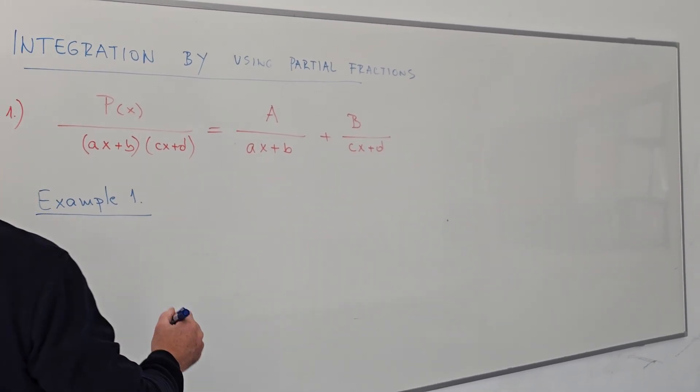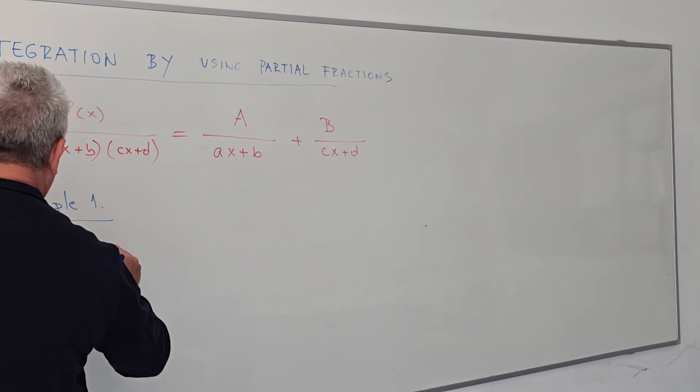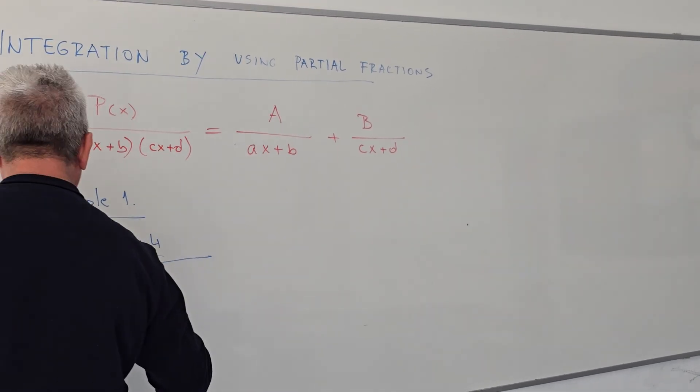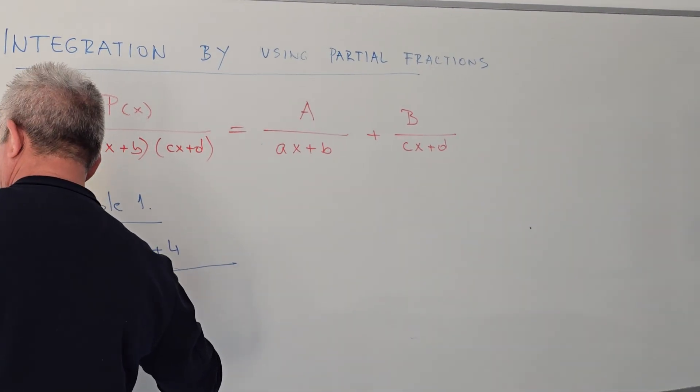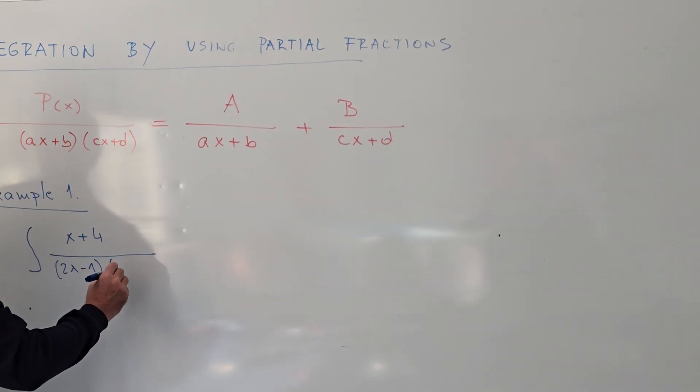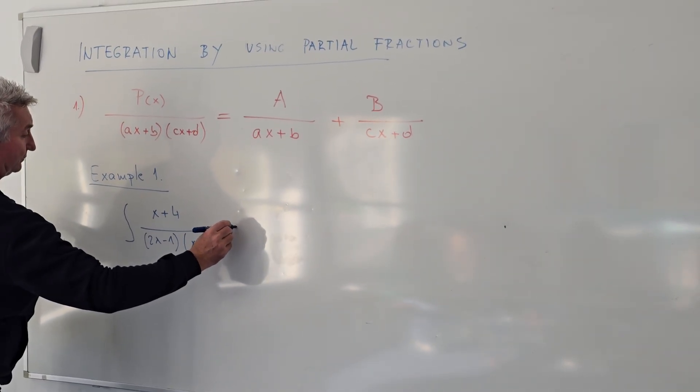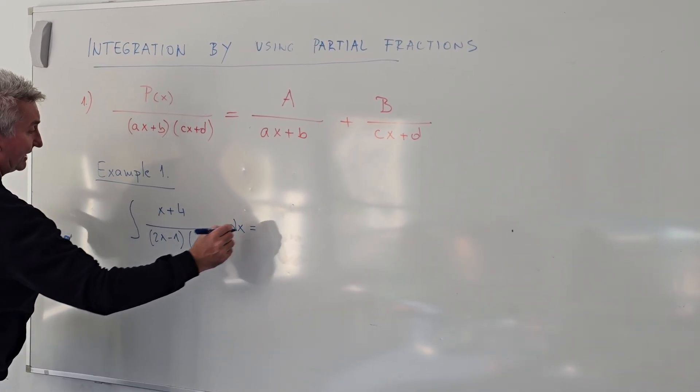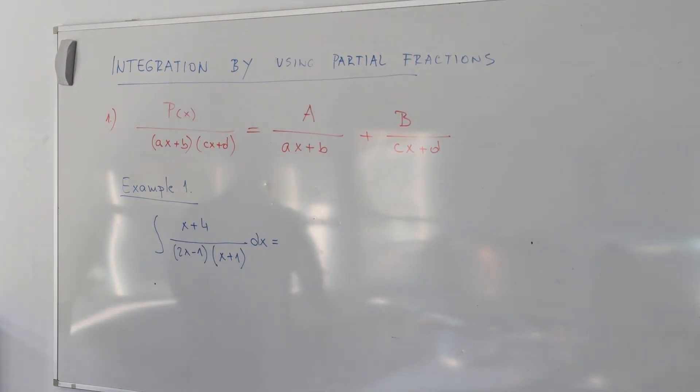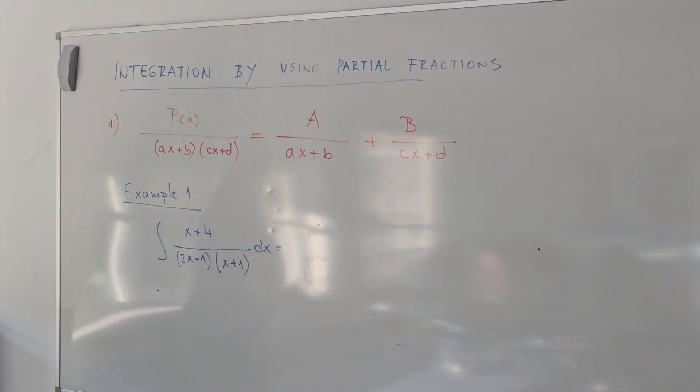We must find the integral of (x + 4) over (2x - 1) times (x + 1), of course with the differential element dx. So in this situation we have two linear expressions in the denominator.